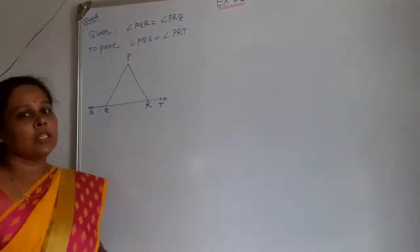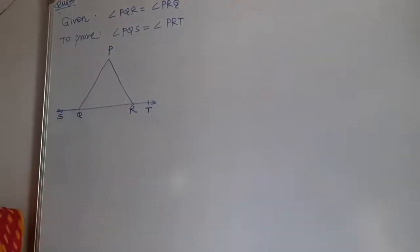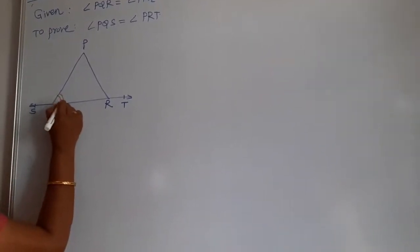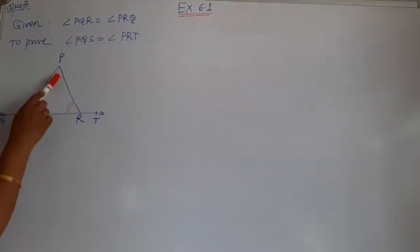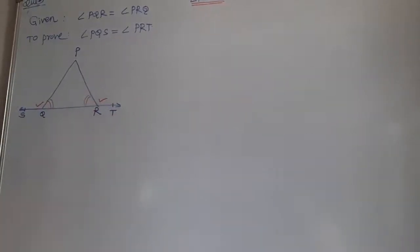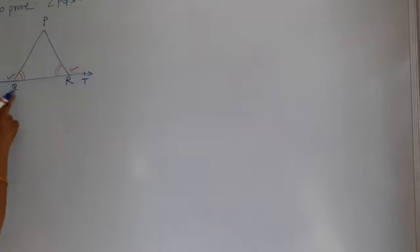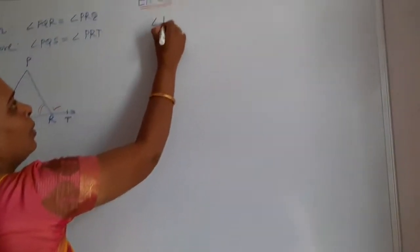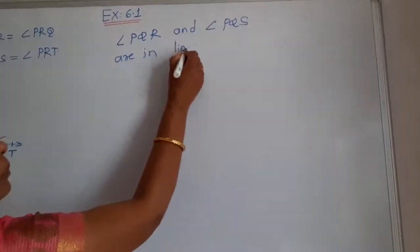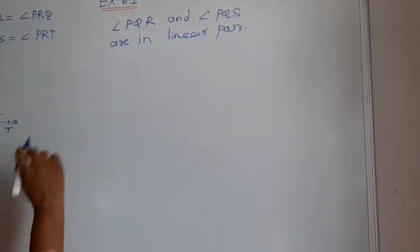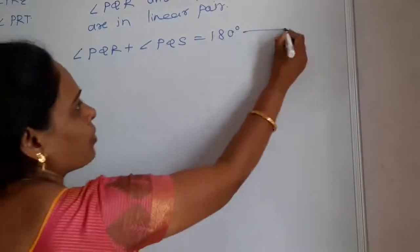Now question number 3. In this question, it is given that PQR is a triangle, and angle PQR equals angle PRQ. You have to show that these two exterior angles are also equal. Now consider angle PQR and angle PQS — both the angles are in a linear pair. Their sum is 180 degrees, so angle PQR plus angle PQS equals 180 degrees. Give this equation number 1.